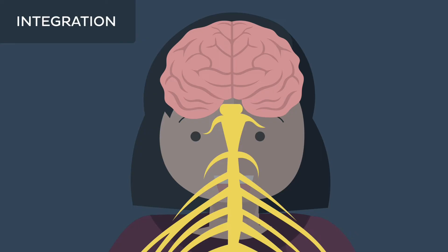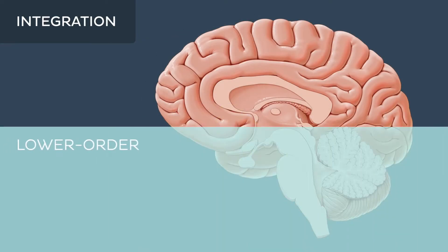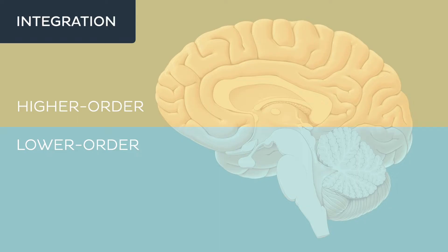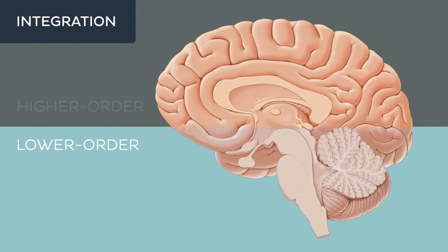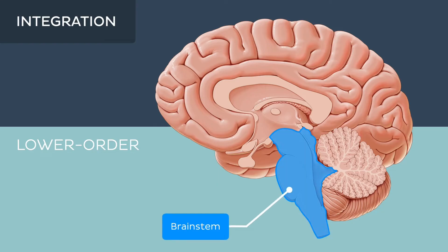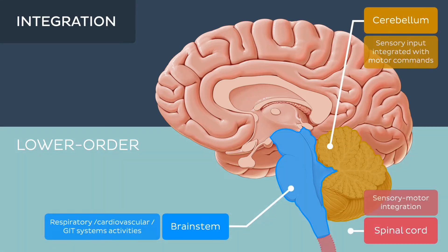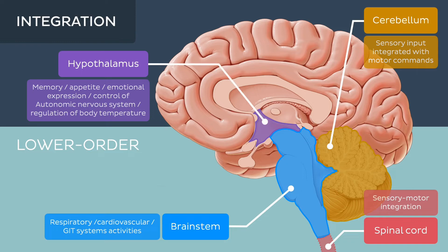Generally speaking, there are two types of integration: lower order and higher order. Lower order integration mainly occurs in the brainstem, cerebellum, and certain structures like the spinal cord, hypothalamus, and amygdala.